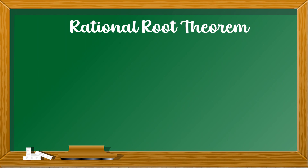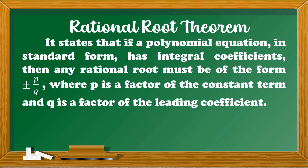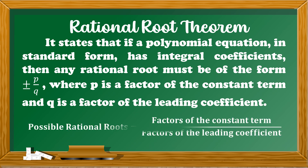The Rational Root Theorem states that if a polynomial equation in standard form has integral coefficients, then any rational root must be of the form positive or negative P over Q, where P is a factor of the constant term and Q is a factor of the leading coefficient. The formula is: possible rational roots equals the factors of the constant term over the factors of the leading coefficient.